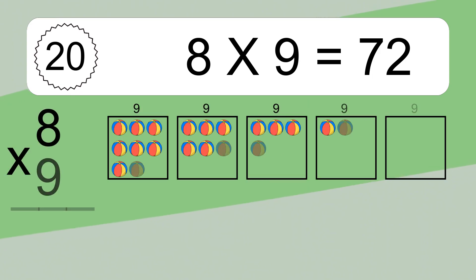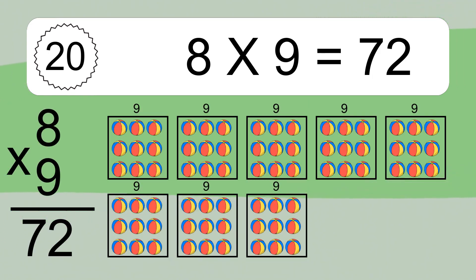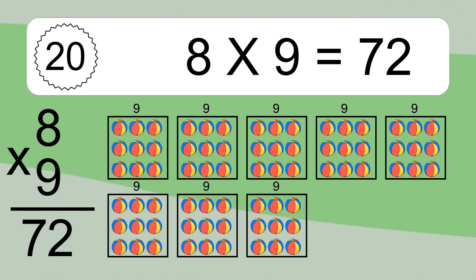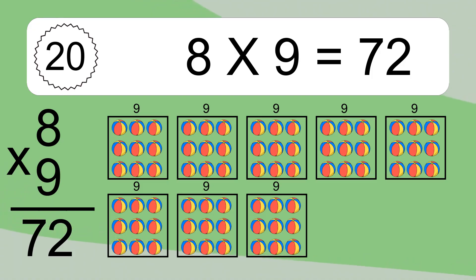8 times 9 equals 72. We have 8 boxes and each box has 9 colorful balls inside. If you count all the balls in all the boxes together, you will have 8 times 9 balls. This equals 72 balls.